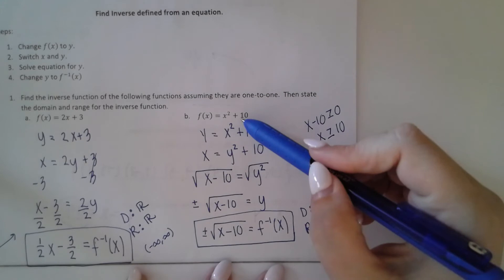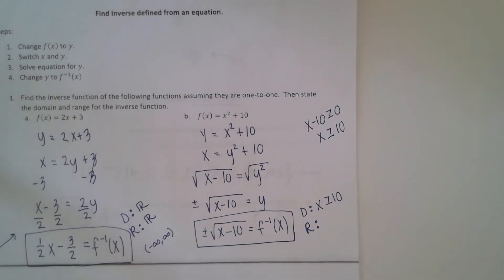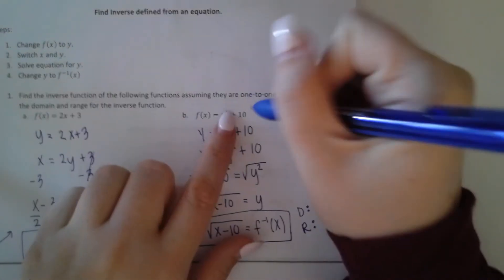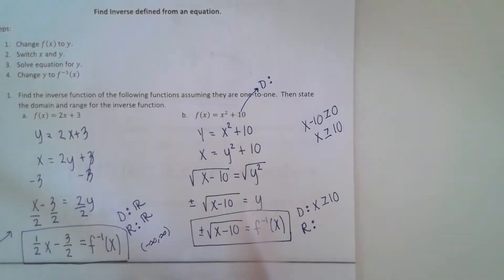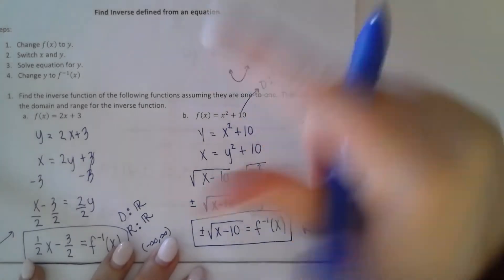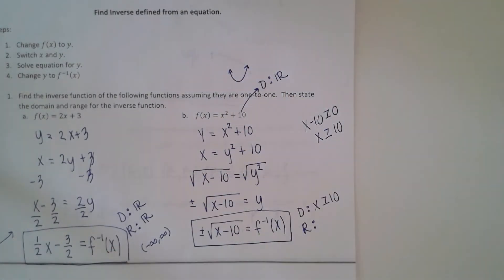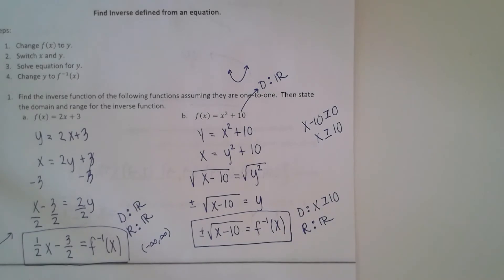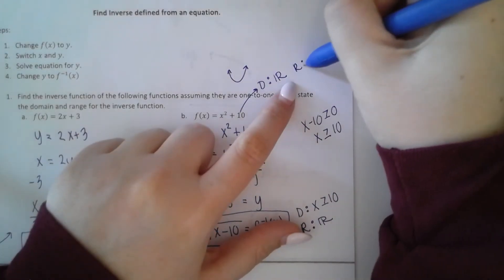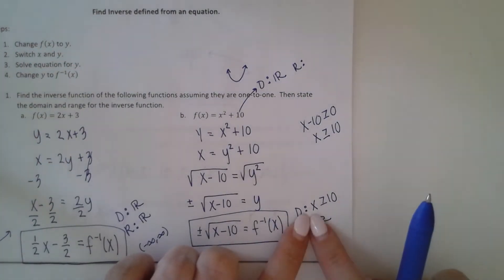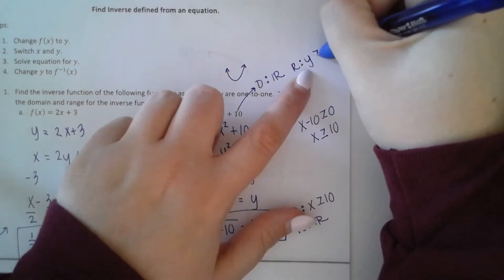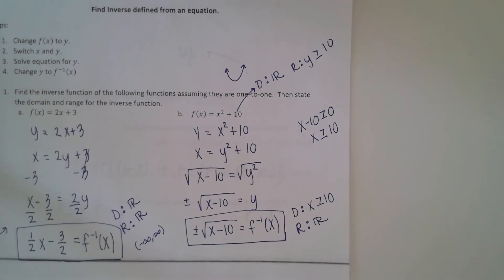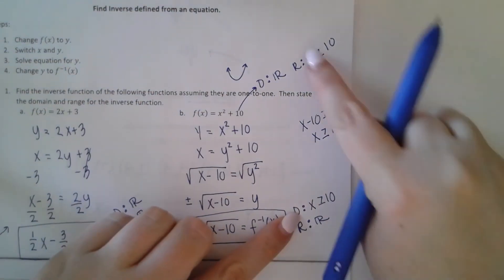For the range, look at the domain of the original function — because remember, they switch. So for the range, let's look at the domain of x squared. Remember that an x squared function is a parabola, which means it goes left forever and right forever, so the domain is all real numbers. If the domain is all real numbers, then the range here is all real numbers. So because x is greater than or equal to 10 for the domain, for the range it would be y is greater than or equal to 10. The domain became the range, the range became the domain.